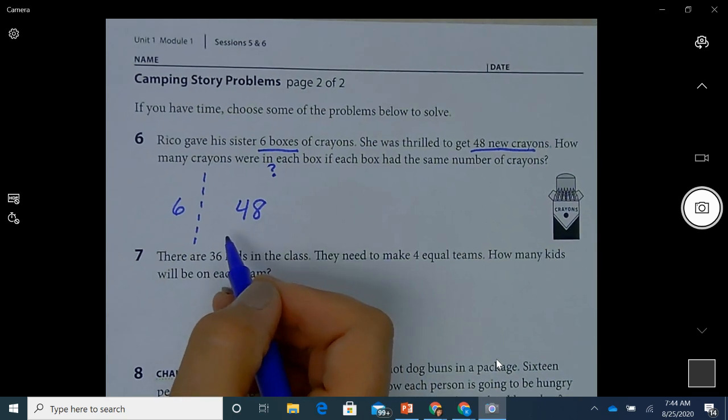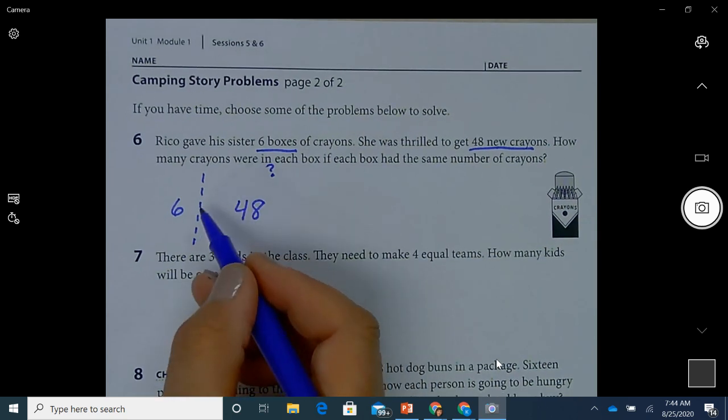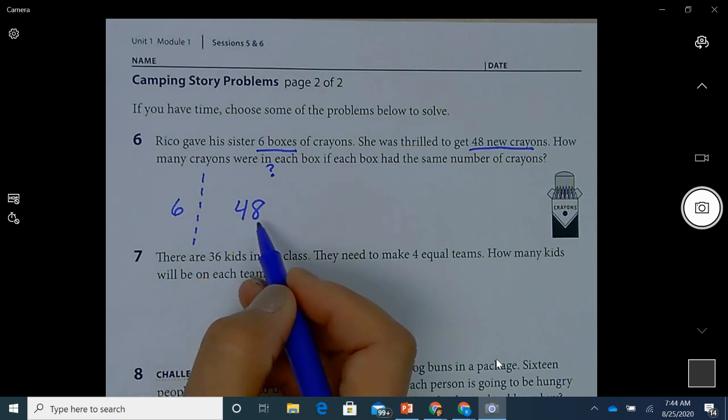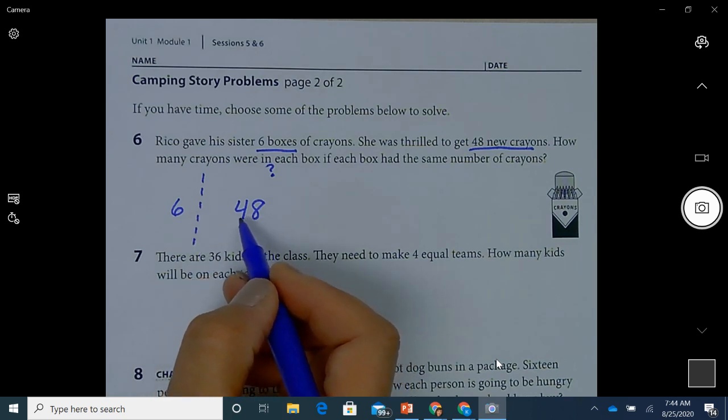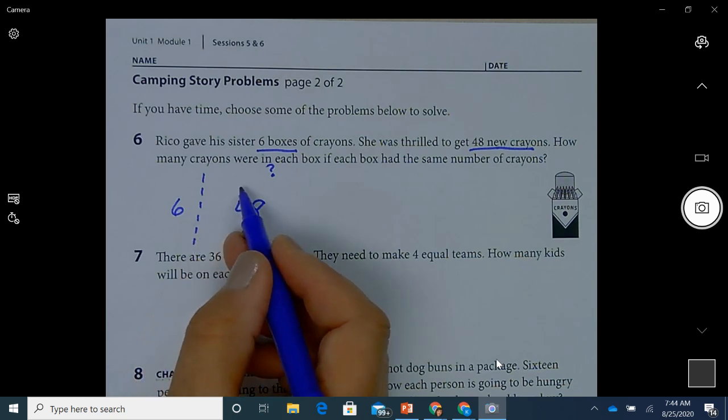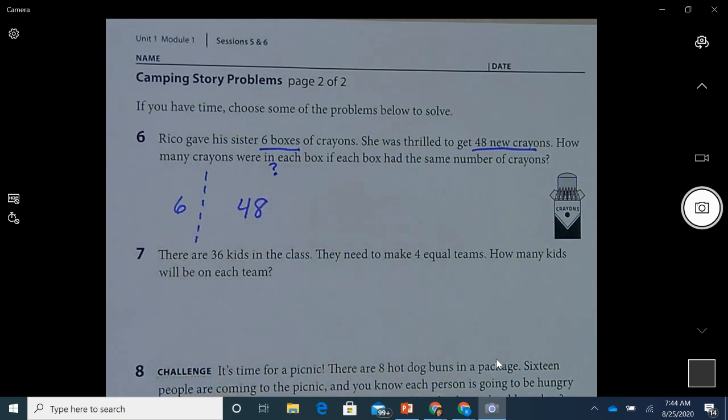You can think about this two different ways. You can think about what times six is 48, or you could think about 48 divided by six equals what? So what's my missing number? Go ahead and put that down for the question in the video. What's the missing number? And it's six times what is 48, or 48 divided by six equals what?